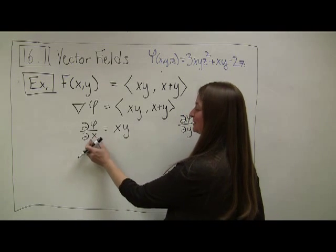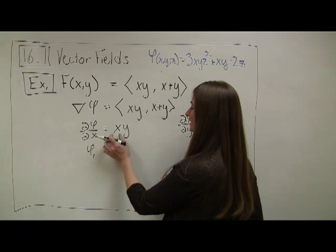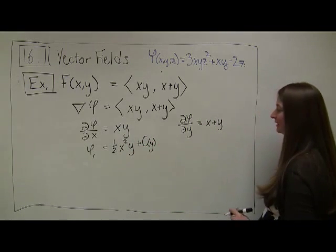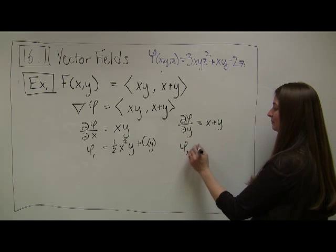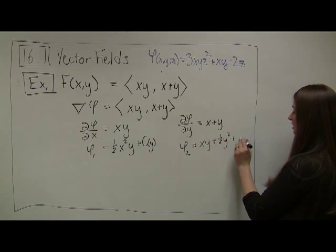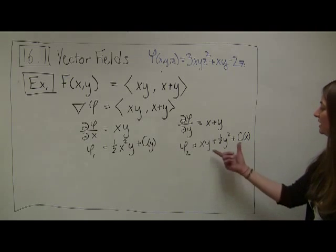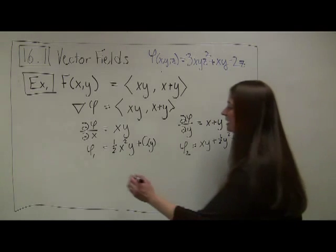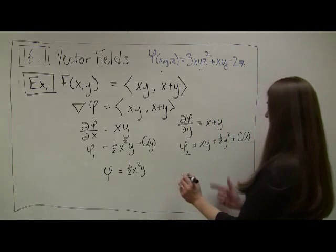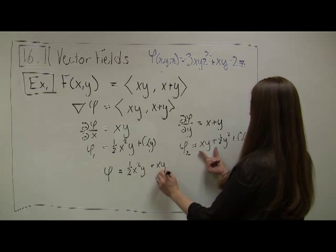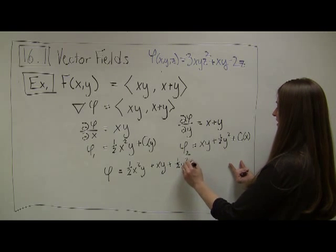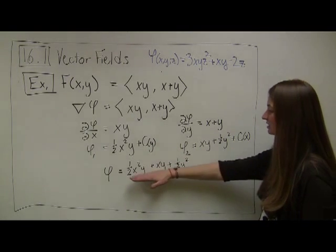Anti-differentiating with respect to x, my first function v₁ = ½x²y plus some constant function c(y), treating y as a constant. Anti-differentiating with respect to y, my φ₂ function gives xy plus ½y² plus some function of x. Looking at these two pieces, our big phi function would have to include ½x²y, then xy, then ½y².